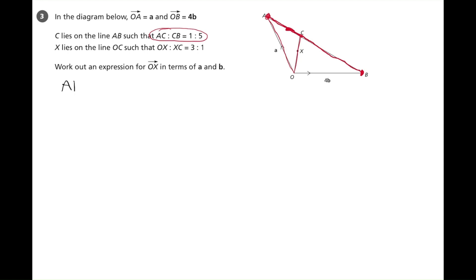So our first job is to find vector AB. Looking at the diagram, we start at A, find another way of getting to B. So we travel down to O, which is minus a, and then we travel from O to B, which is plus 4b.